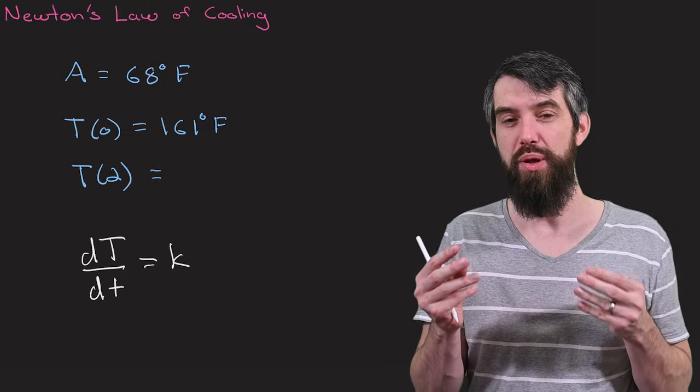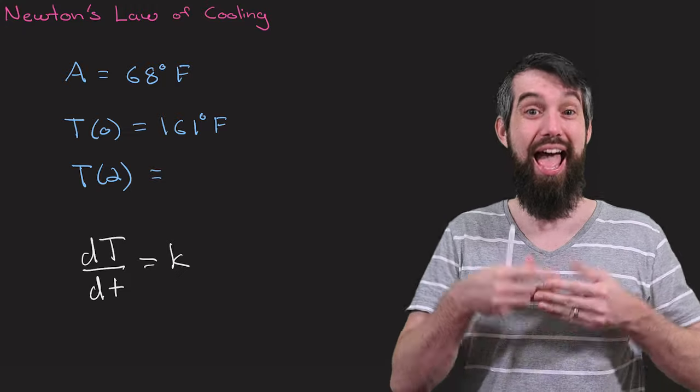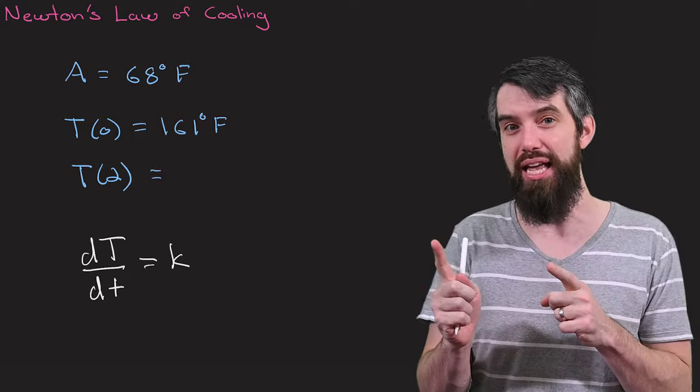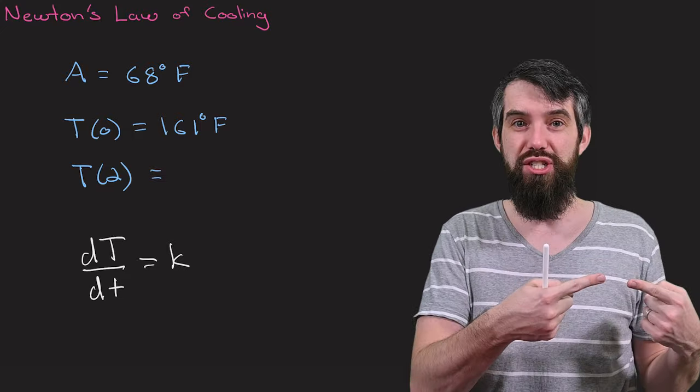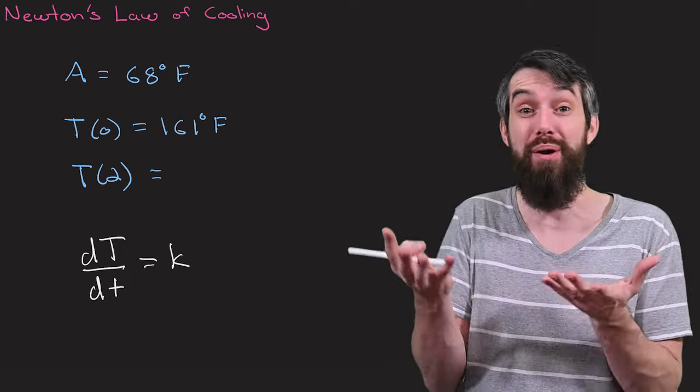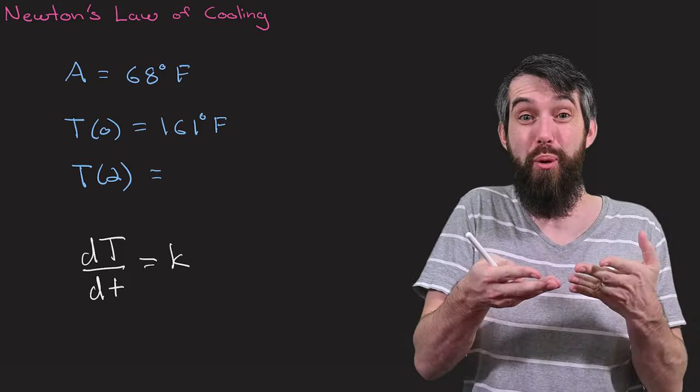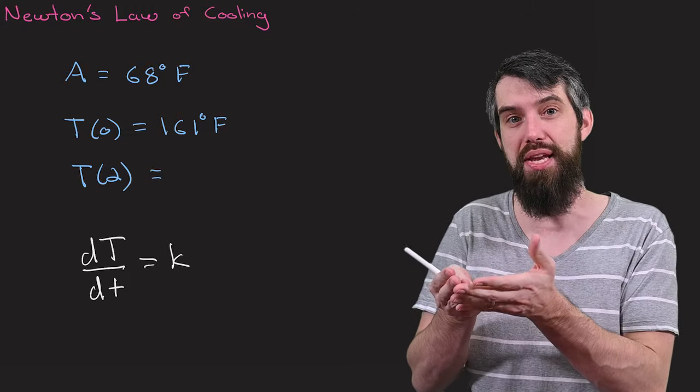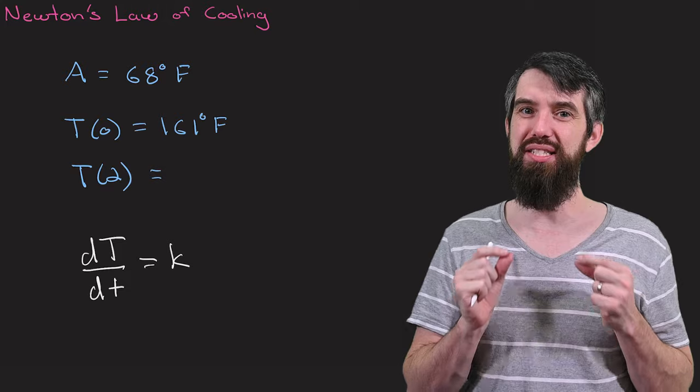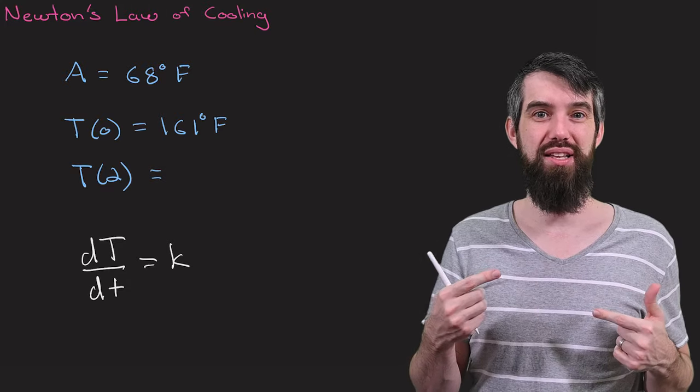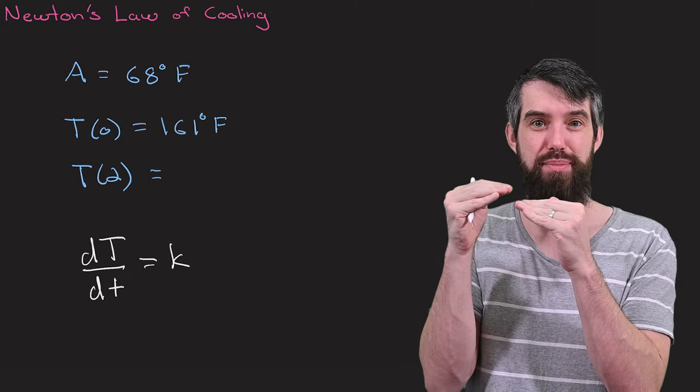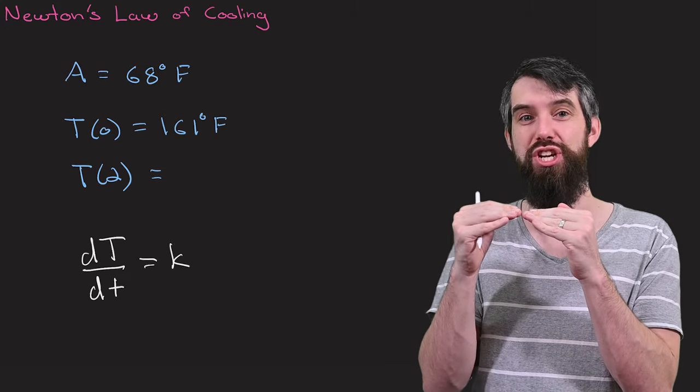But what should that something be? Well, when we were studying exponential growth, like for example the spread of a pandemic, you'd say the rate of change is proportional to how many people are infected. So the rate of change was proportional just to the number, to the quantity of the variable that we were studying at that time. But now that doesn't seem quite as reasonable. For example, if the temperature in my cup is very close to the ambient temperature, I wouldn't expect a very rapid change.